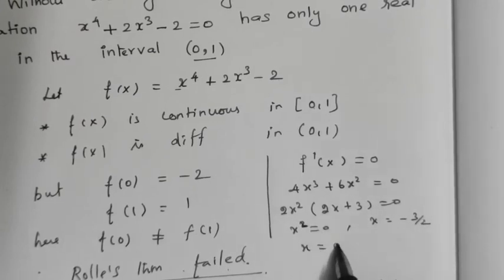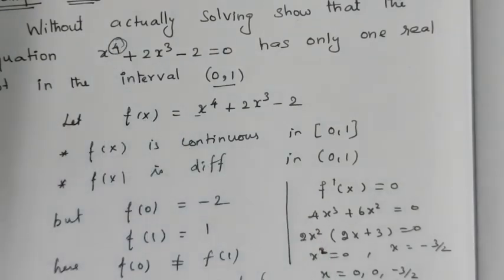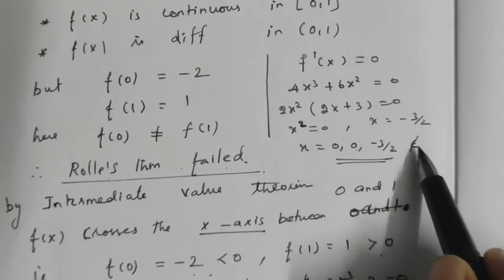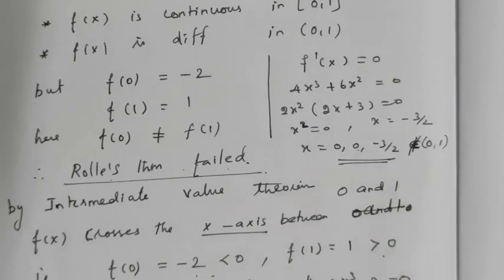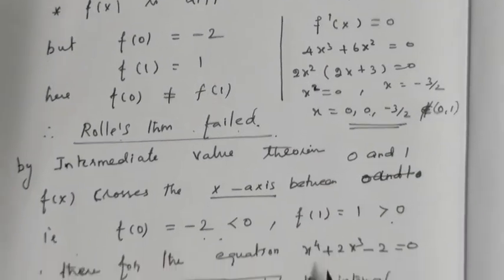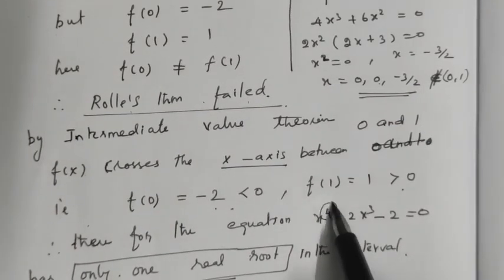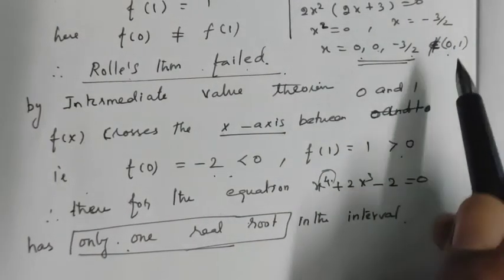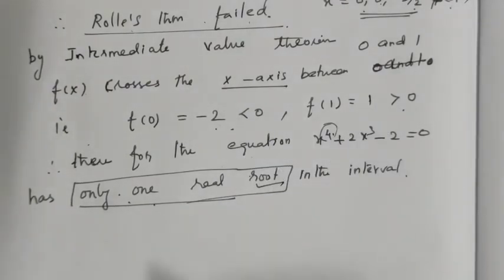The roots of the derivative are 0, 0, and -3/2. So the derivative has 3 critical points. Since the original polynomial has degree 4, it has 4 roots. All 3 of those other roots are outside the interval [0, 1]. Therefore, in the interval [0, 1], there is exactly 1 real root. That is the real root in the interval (0, 1).